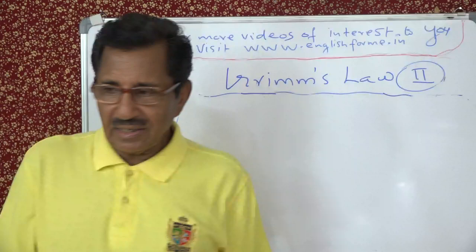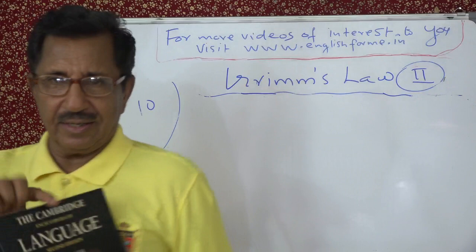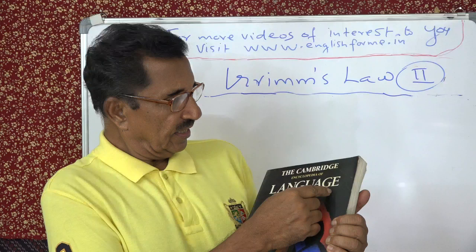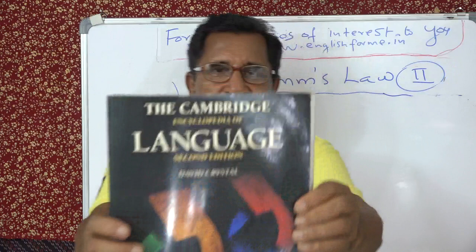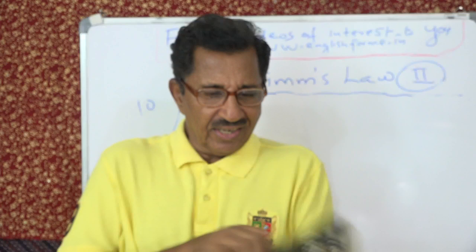I will show you a book. If it is available in your library, you can go through it. This is the Cambridge Encyclopedia of Language, Second Edition, by David Crystal. He is considered an authority in this field.